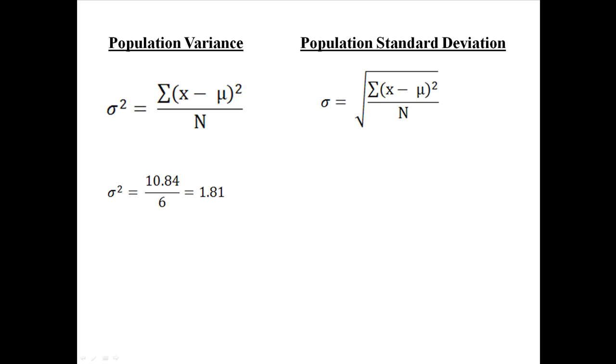So back to these equations we found the variance to be 1.81. Now the standard deviation is actually pretty easy to find because in order to find it you just take the square root of the variance. So if our variance is 1.81 that means our standard deviation is 1.35. That's the population variance and the population standard deviation.